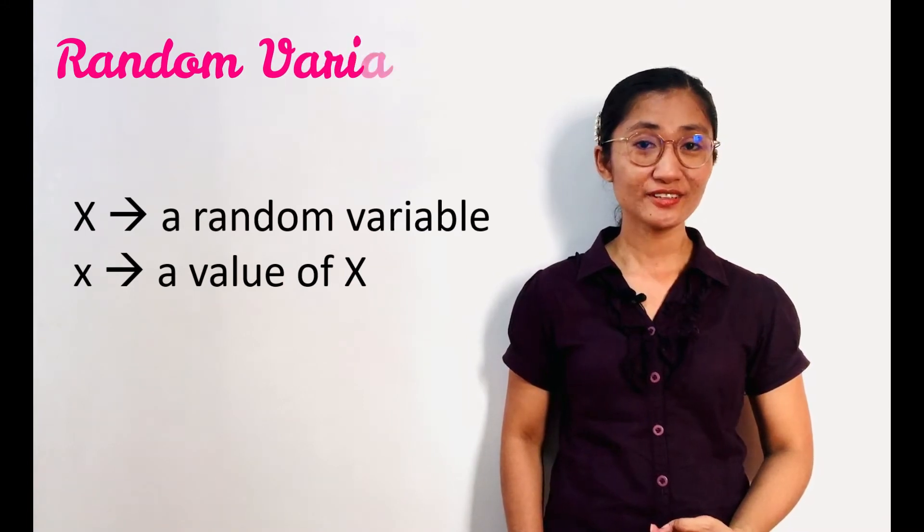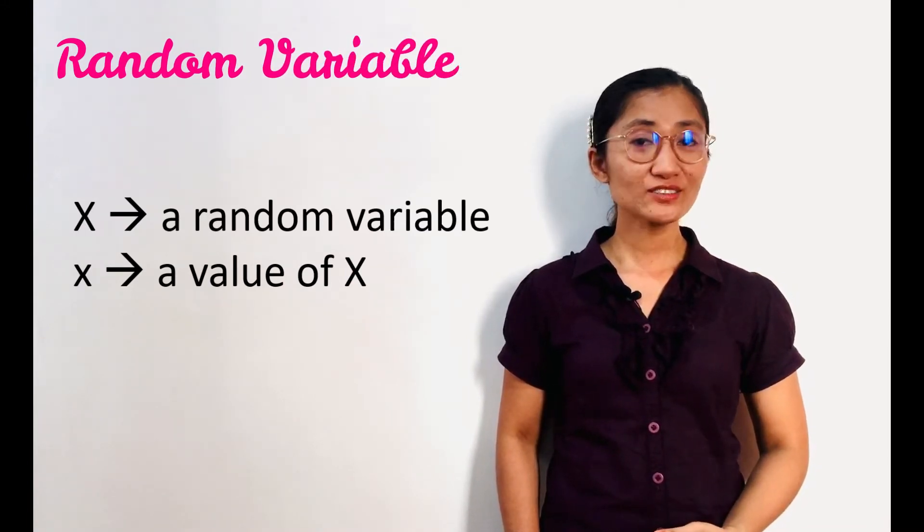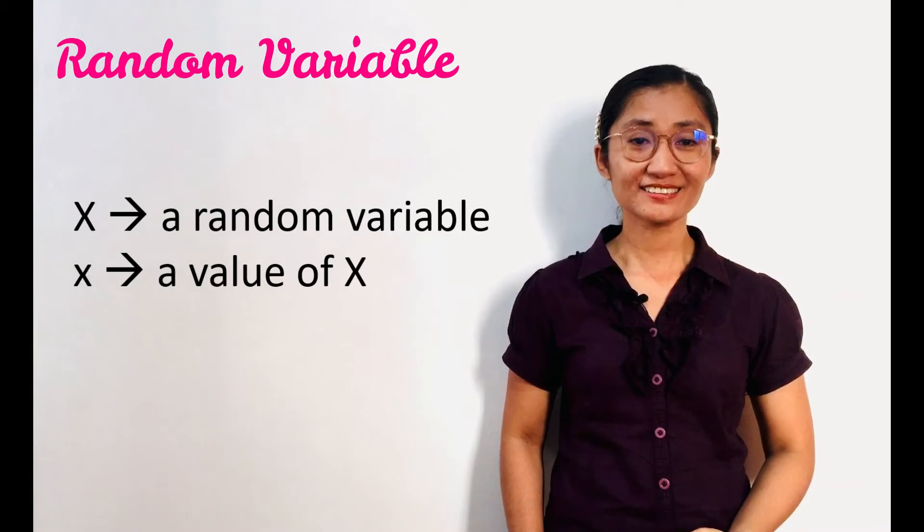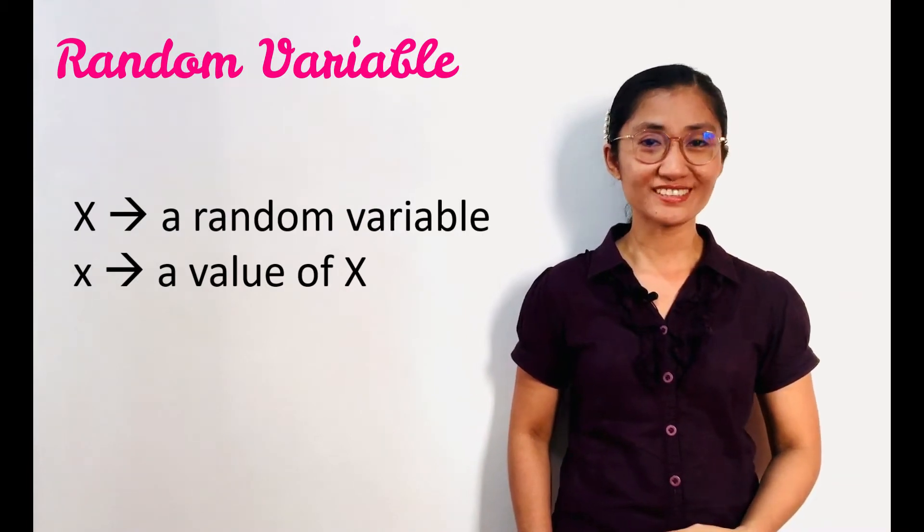A random variable is typically represented by an uppercase letter, usually X, while its corresponding lowercase letter x is used to represent one of its values.